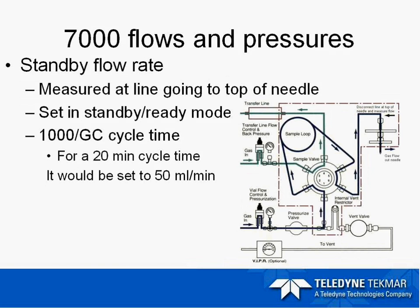First, we are going to talk about setting standby flow rate in the 7000. We would like to measure our standby flow at the top of the needle. We set this gas flow rate when it is in the ready or standby mode. Typically, the standby flow rate is set at 1000 divided by the GC cycle time. The correct standby flow rate helps with carryover between samples. It's important to remember we want to measure the gas flow rate coming out of the needle.